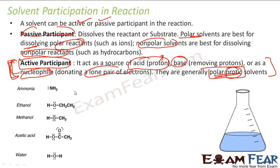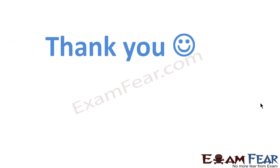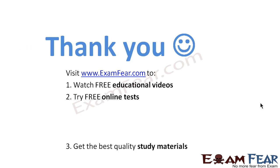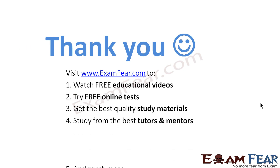So these are my examples of polar protic solvents: ammonia, ethanol, methanol, acetic acid, water. If you have these kinds of solvents, please be watchful, because these are my polar protic solvents. Visit examfear.com to watch free educational videos, try free online tests, get the best quality study materials, and study from the best tutors and mentors. Thanks once again.